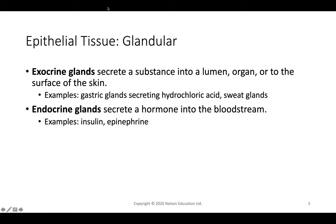Epithelial tissue includes all glandular tissue. We have two types: exocrine glands and endocrine glands. Exocrine glands secrete toward the surface of the skin or into an organ lumen — exiting the body. Good examples include gastric glands, which secrete hydrochloric acid (HCl) in the stomach to help break down food.